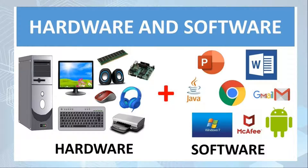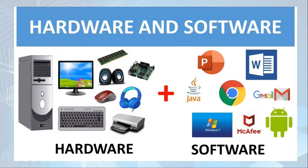So, the difference between hardware and software: hardware examples include printers, headphones, speakers, the monitor, and the CPU or computer case. For software, we have the operating system such as Windows 7, Java, Microsoft PowerPoint, Google Chrome, MacAPI, antivirus software, Android, Gmail, and a word processor called Microsoft Word.